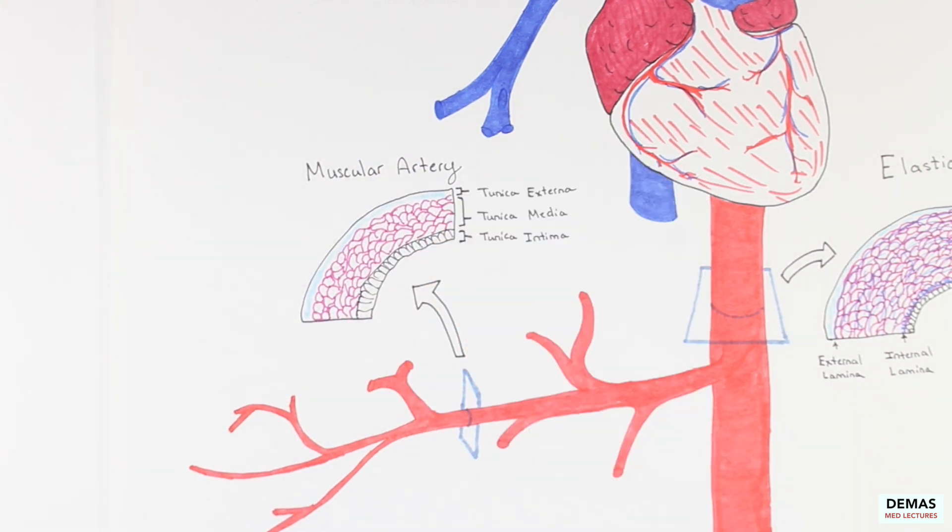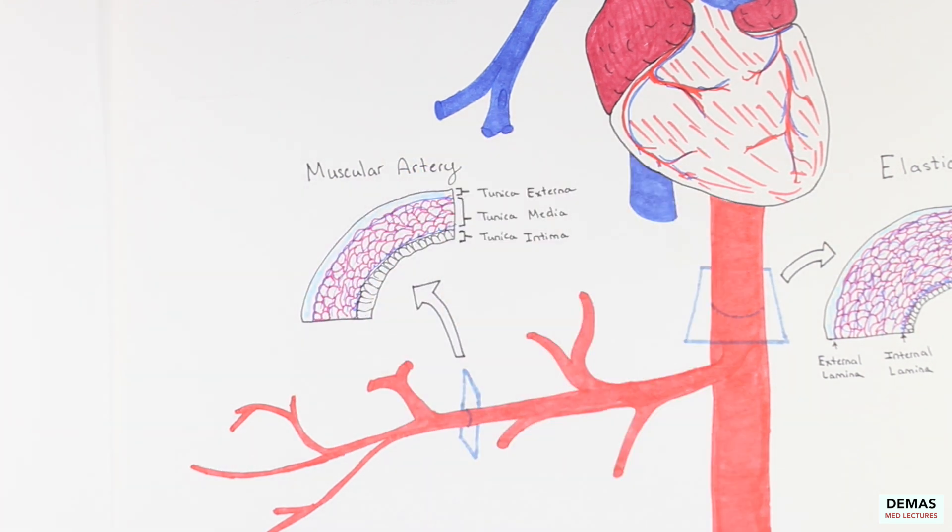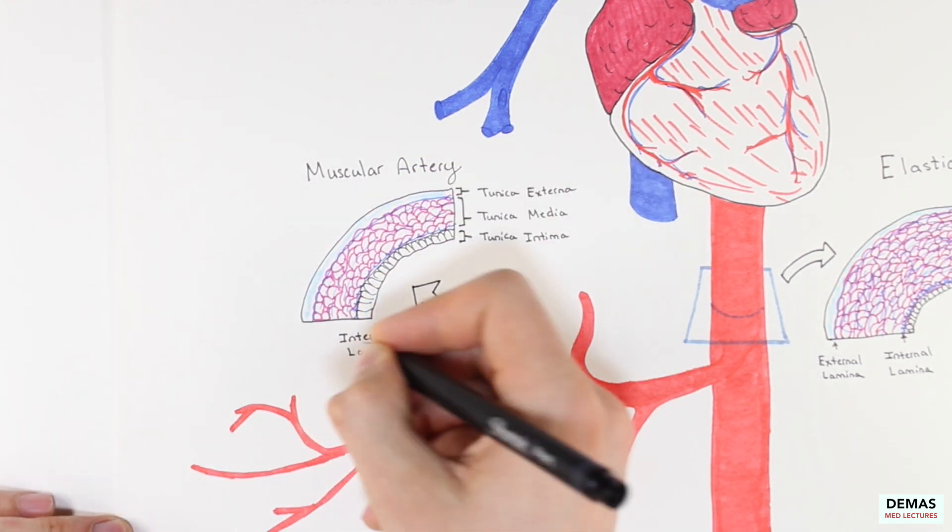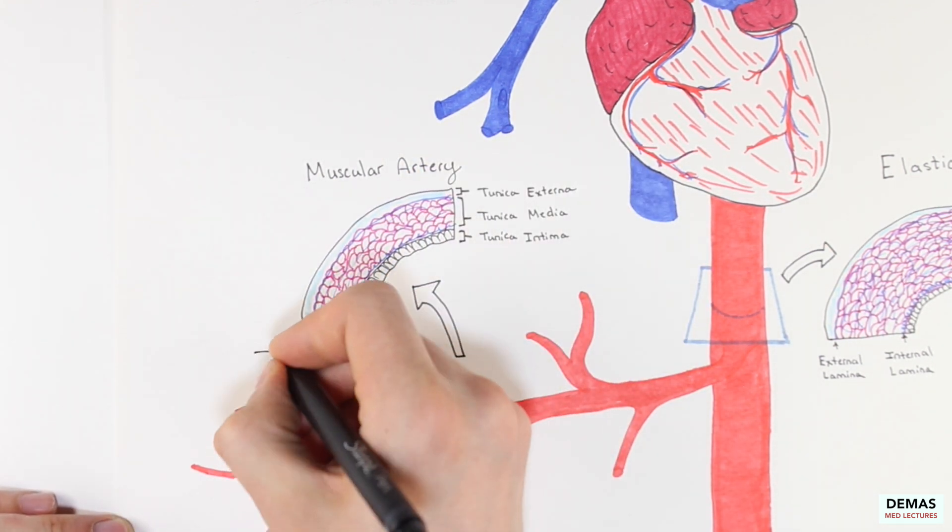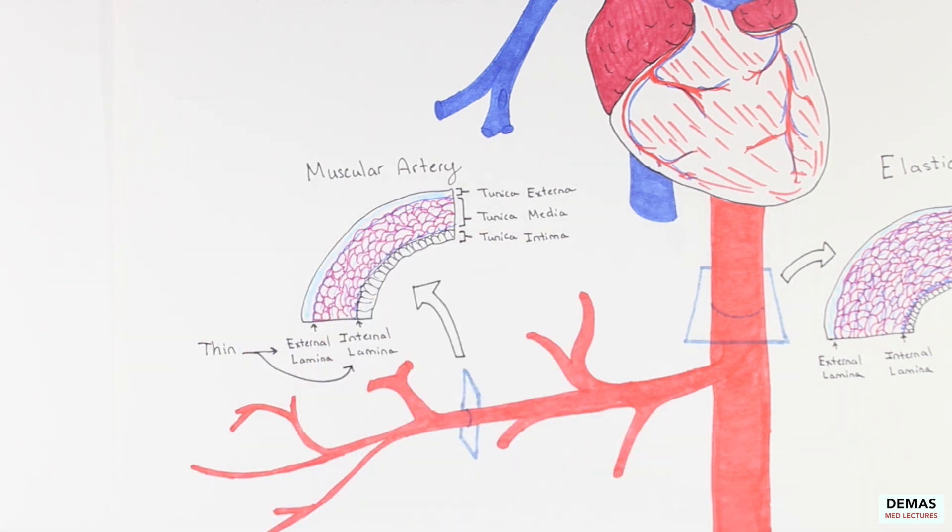These muscular arteries also contain scattered elastic fibers within the tunica media, and a thin external and internal lamina, like the elastic arteries, but they are less prominent.